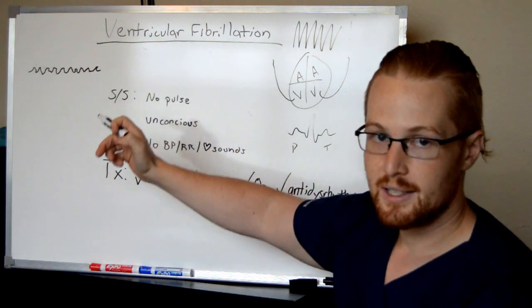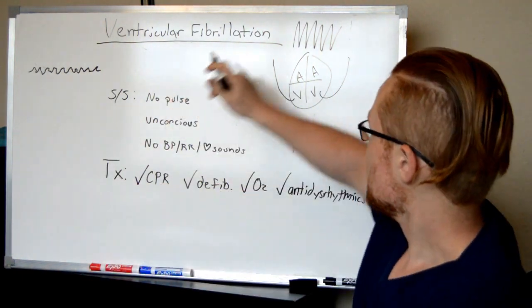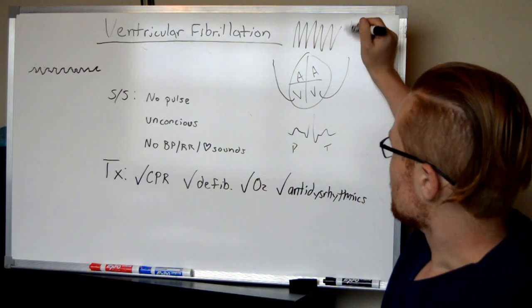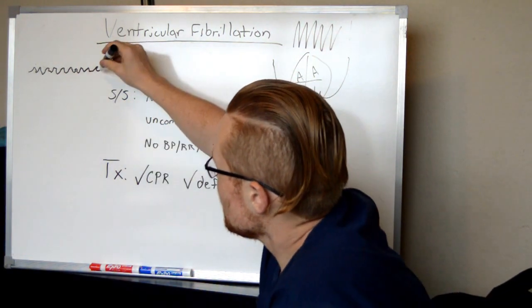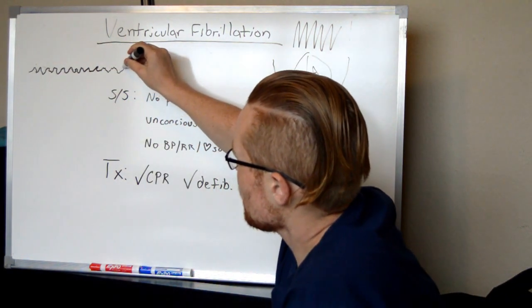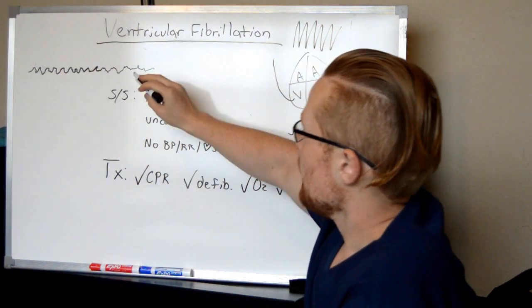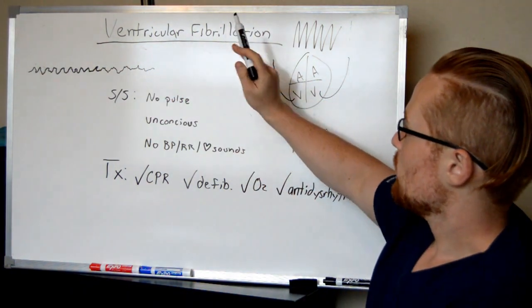So when you look at the EKG, you're not going to see big sawtooth contractions here. You're going to see it's just quivering all over the place, and that is the telltale sign of ventricular fibrillation.